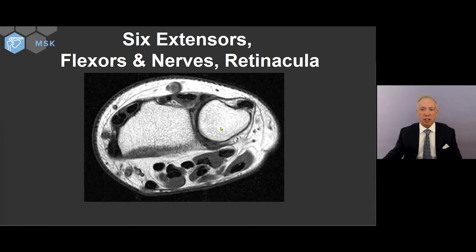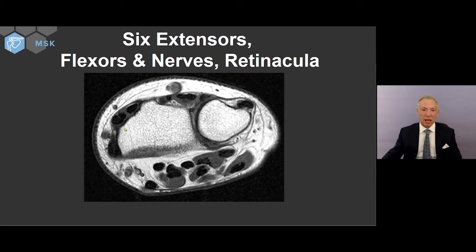Here is the extensor compartment with any one of six compartments. Compartment one: abductor pollicis longus and extensor pollicis brevis. A way to remember: longus, brevis, longus, brevis, longus — then you're off and running. So: abductor pollicis longus, extensor pollicis brevis; extensor carpi radialis longus and brevis; extensor pollicis longus; then the communal tendons; then extensor digiti minimi — easy to remember as the pinky finger — and the extensor carpi ulnaris with its subsheath, to be differentiated from the superficial retinaculum.